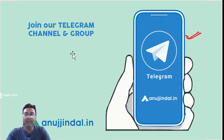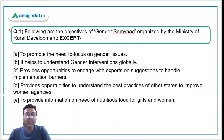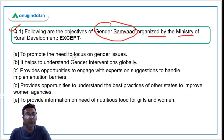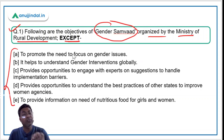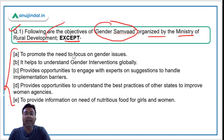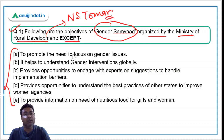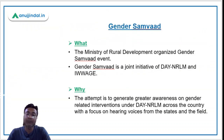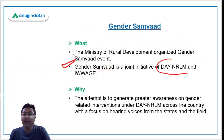The first question asks about the objectives of 'Gender Samwad' organized by the Ministry of Rural Development — you have to identify which option is NOT one of its objectives. The ministry is headed by Mr. Narendra Singh Tomar, who is also the Minister of Agriculture and Farmers Welfare. Gender Samwad is a joint initiative under DAY-NRLM (Deen Dayal Antyodaya Yojana - National Rural Livelihood Mission) and IWAGE.